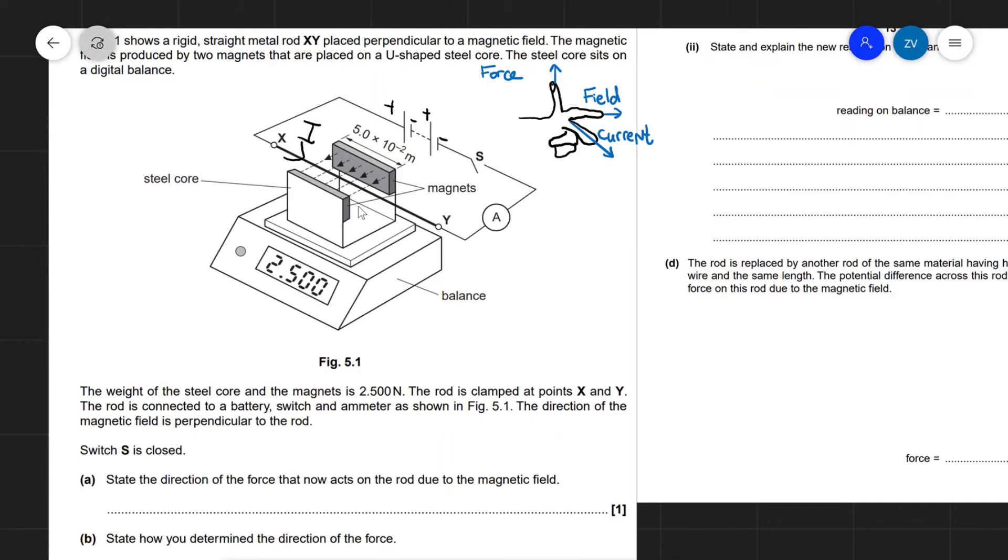Okay, now that you have applied this rule, you should be able to see that the direction at which the force acts on the rod due to the magnetic field is downwards. So we can just write in downwards, like so.